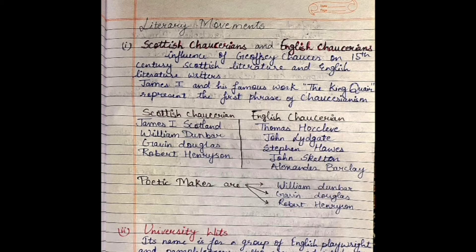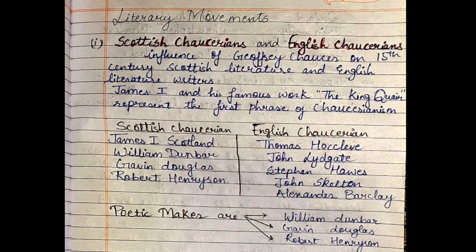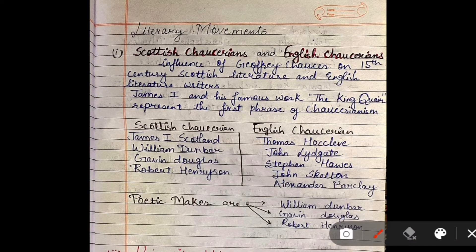This is the first video on literary movements: Scottish Chaucerian and English Chaucerian. Scottish Chaucerians are writers from Scotland who followed the writing style of Geoffrey Chaucer. English Chaucerians are English writers who also followed Geoffrey Chaucer. This phrase started from the work of James I — his first work was 'The King's Quair,' which is why the Chaucerian world phrase started. Scottish Chaucerians include James I of Scotland, William Dunbar, Gavin Douglas, and Robert Henryson.